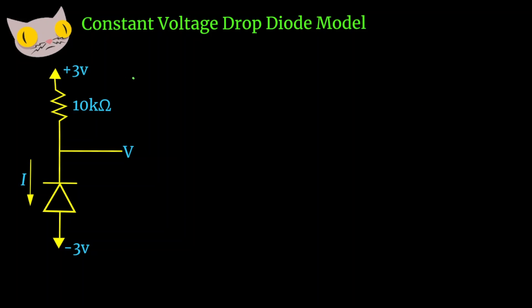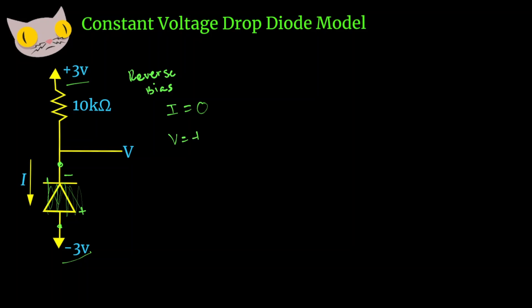For this diode circuit, we can see that it is reverse bias, because we have the negative cathode connected to the positive lead and the positive anode connected to the negative lead. That means we can treat this as an open circuit — just forget about what's going on there. Because it's an open circuit, we automatically know that our current is going to be 0, and since no current is flowing, our voltage is simply going to be positive 3 volts.